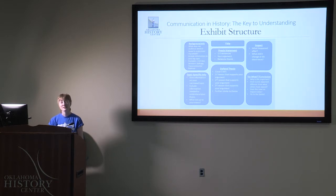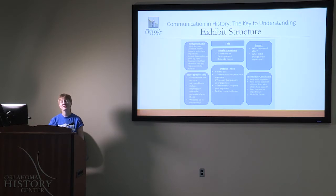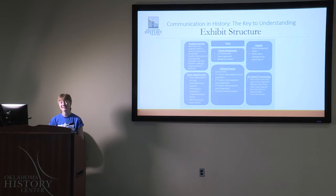We're going to start with the far side with background info and topic-specific info. This is where you put things for an overview of your topic and then zero in on information about your specific topic. For instance, if you're talking about a specific battle during the Civil War, at the top in background info, you would put things like specific dates for the Civil War as a whole, specific politicians or generals that were involved, specific moves that changed over time, maybe a timeline. At the bottom in topic-specific info, this is where you would start talking more about the battle, about whatever happened on the days or hours of the battle, specific maps of the battle, and the key moves that happened then.